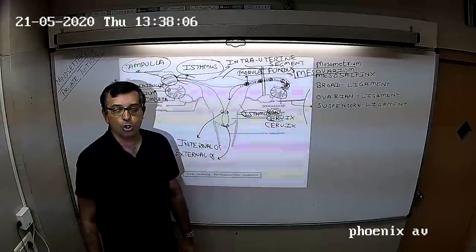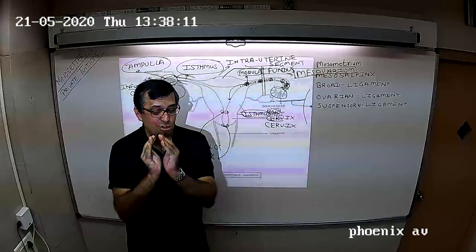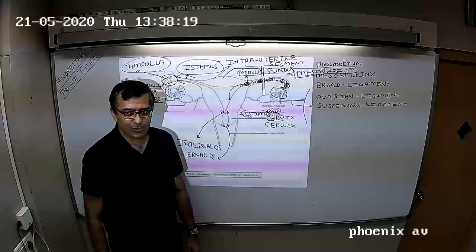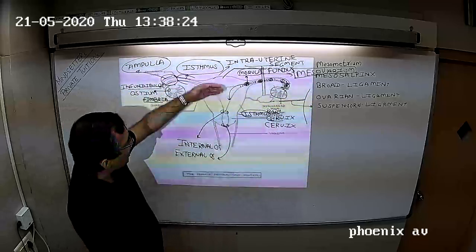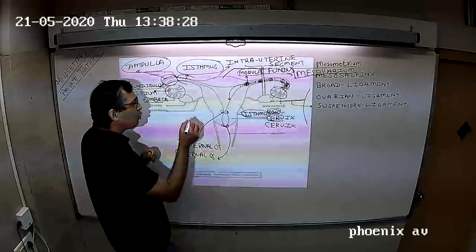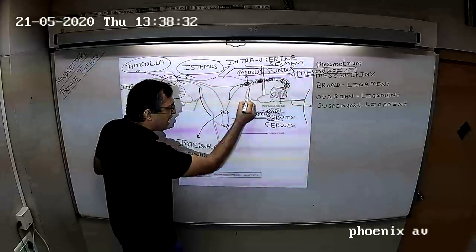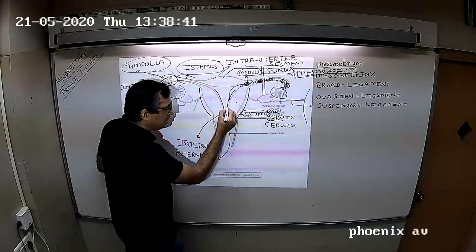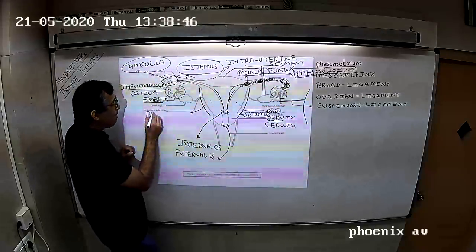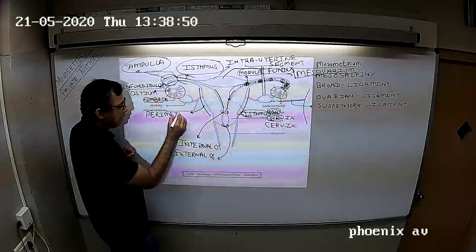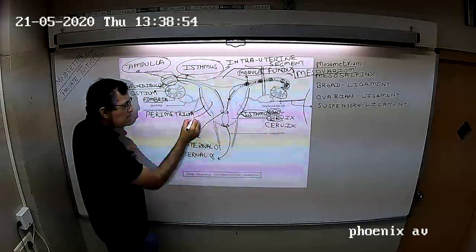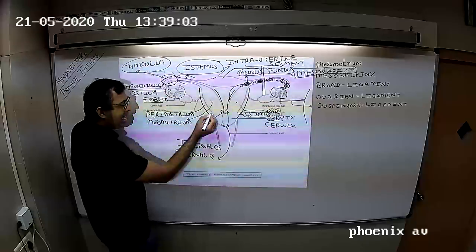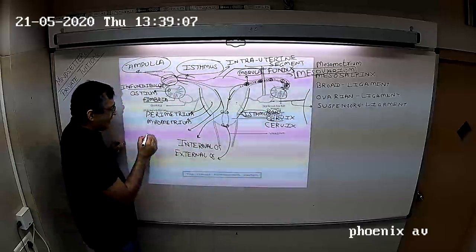The stretching of the internal os helps the head to get locked into the cervix. A cut section of the uterus shows three layers: an outer layer, a middle muscular layer, and an inner delicate layer called as the endometrium. The outer layer is called as the perimetrium. The middle is the muscular layer called as the myometrium. And the inner is the delicate layer called as the endometrium.